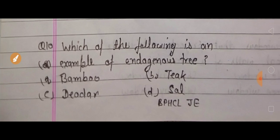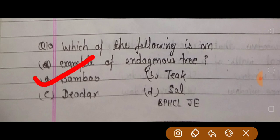Next question: which of the following is an example of endogenous tree? Options में से endogenous tree कौन सी है? Endogenous tree वो है जिसमें growth inward direction में होती है. Bamboo यही होता है. Bamboo is an endogenous tree example.